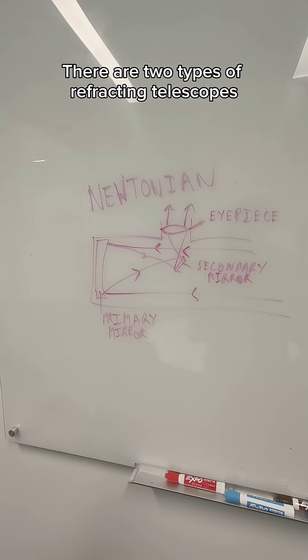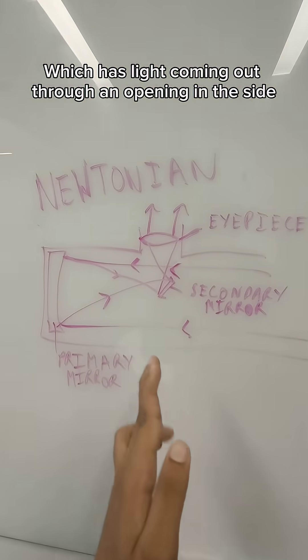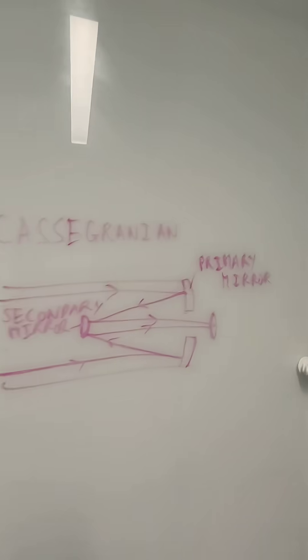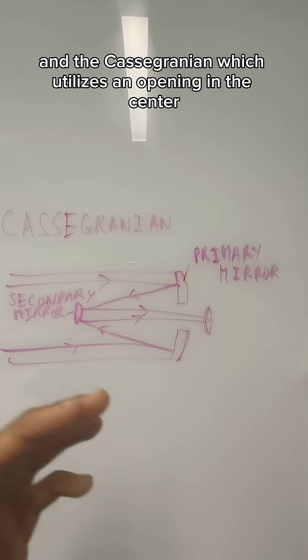There are two types of reflecting telescopes. One is the Newtonian, in which light comes out through an opening in the side, and the Cassegrinian, which usually utilizes an opening in the center.